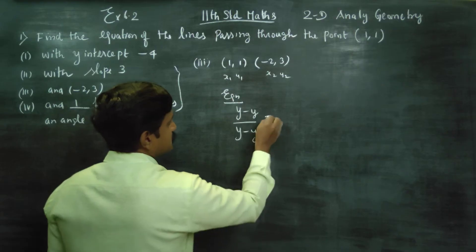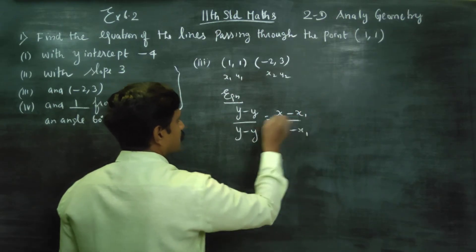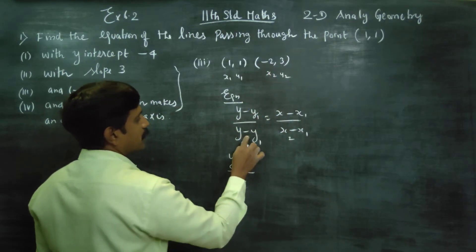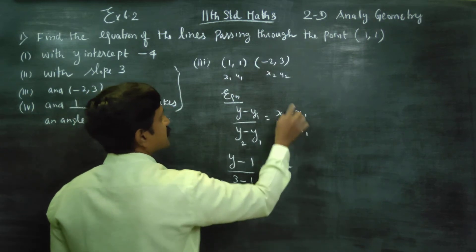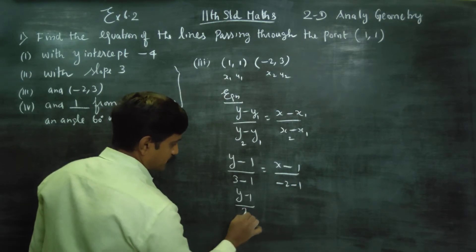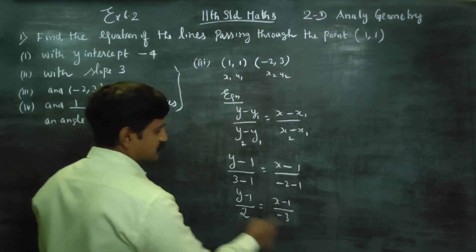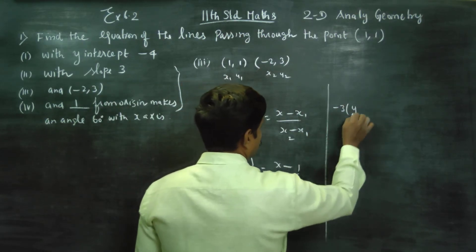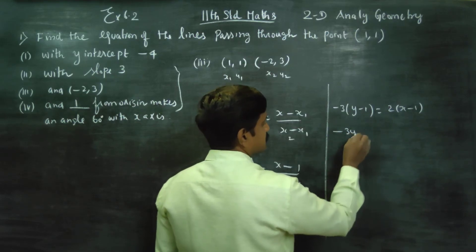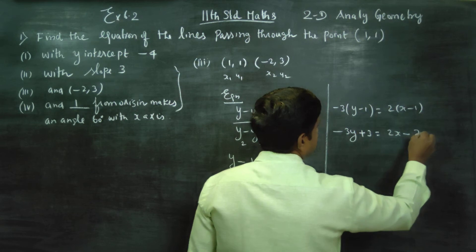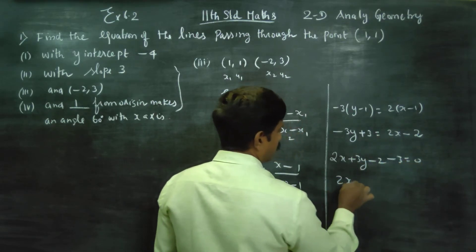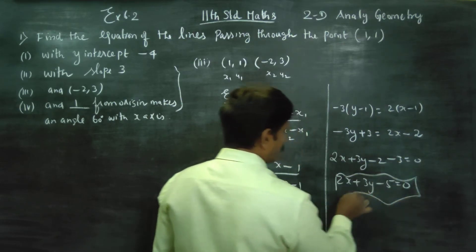The two-point formula: (y − y₁)/(y₂ − y₁) = (x − x₁)/(x₂ − x₁). Here y₁ = 1, y₂ = 3, x₁ = 1, x₂ = −2. So: (y − 1)/(3 − 1) = (x − 1)/(−2 − 1), giving (y − 1)/2 = (x − 1)/(−3). Cross multiplying: −3(y − 1) = 2(x − 1), so −3y + 3 = 2x − 2, which gives 2x + 3y − 5 = 0.